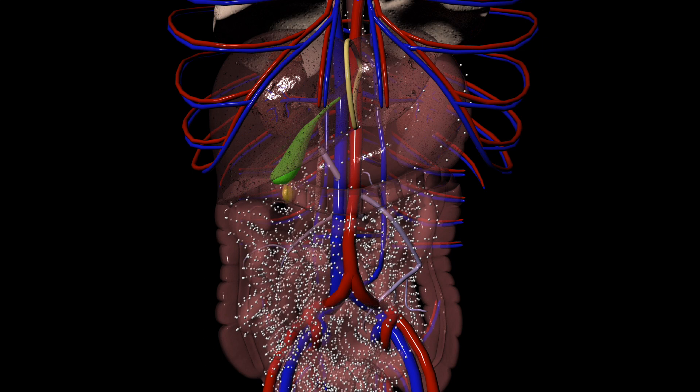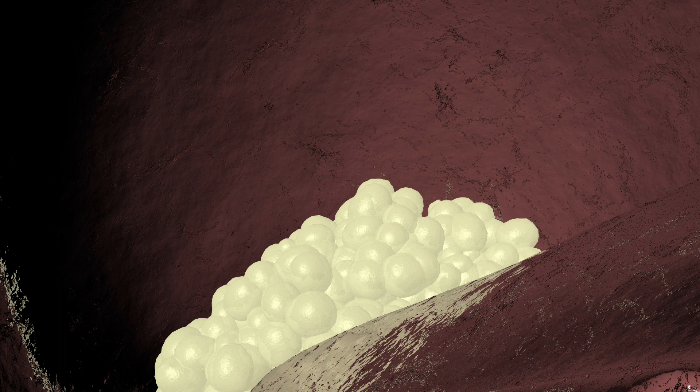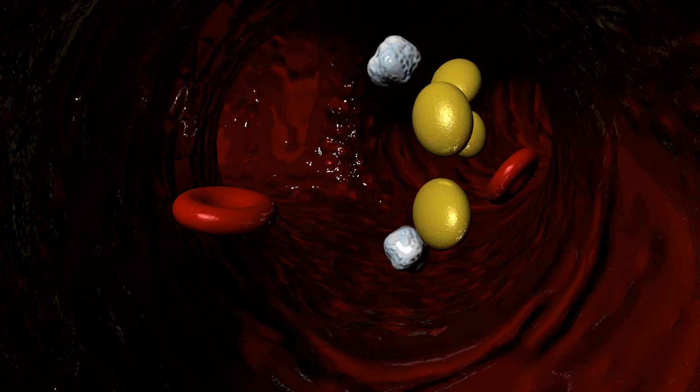Absorption inhibitors block cholesterol from absorbing through the small intestine. With reduced cholesterol entering the liver from the intestine, less free cholesterol is available to circulate in the bloodstream.